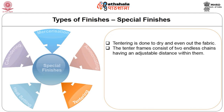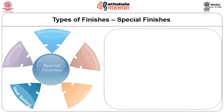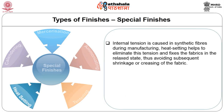Tentering is done to dry and even out the fabric. The tenter frame consists of two endless chains having an adjustable distance within them. The fabric runs through this frame and is carried into the drying chamber where hot air removes any moisture present in the fabrics and imparts dimensional stability.